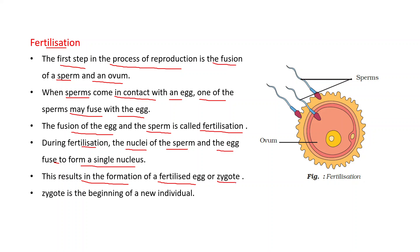This results in the formation of a fertilized egg called a zygote. Remember, this zygote is a single cell, and this zygote is the beginning of a new individual. As we discussed, millions of sperms are produced, but there is only one egg produced per month from one of the ovaries. These sperms approach the ovum, but only one sperm fuses with the ovum, resulting in the formation of the zygote.